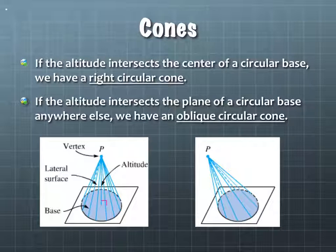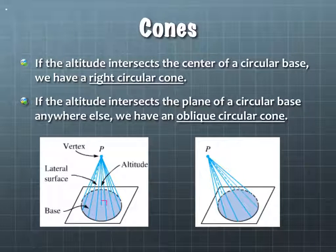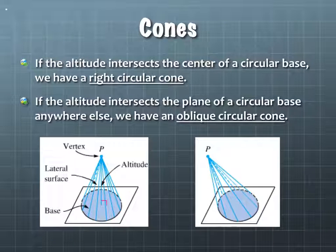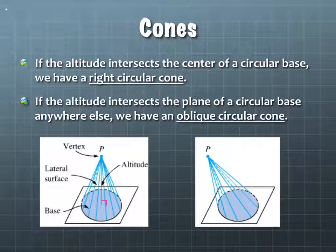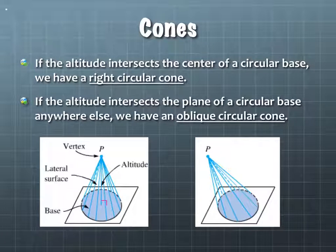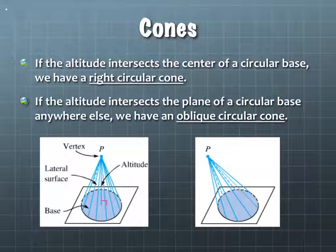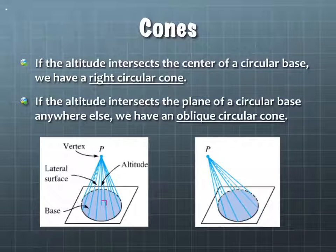Any questions about these last two shapes? A student asked: there are no edges for cones, so would Euler's formula still work? It doesn't work because you don't have any vertices, you don't have any edges, and you can't count the faces the same way. The lateral surface doesn't count as a face — we don't call it a face because faces are flat. It's a surface, but not a face.